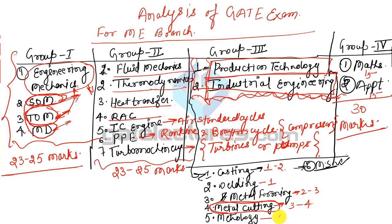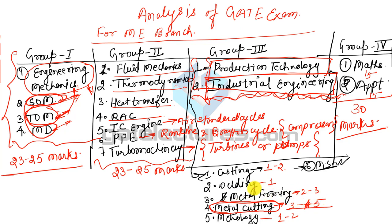Including CNC and non-conventional machining processes, metal cutting contributes 3 to 5 questions — minimum 3, maximum 5 to 6. Metal Forming contains 2 to 3 questions.